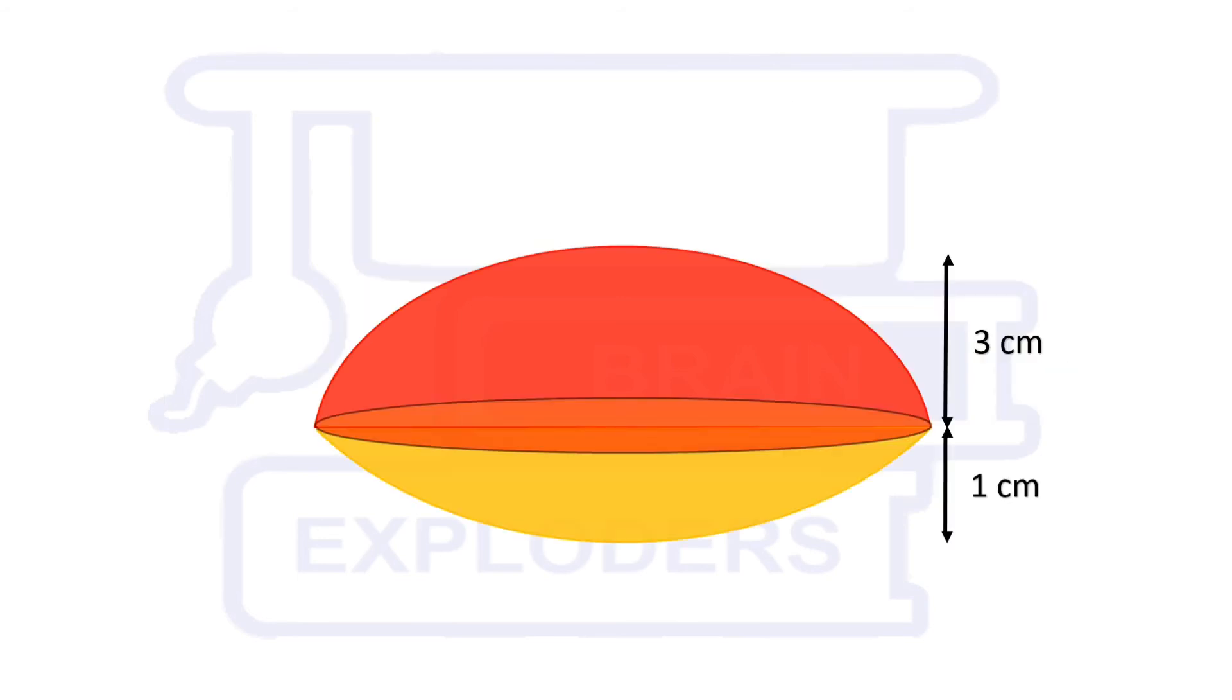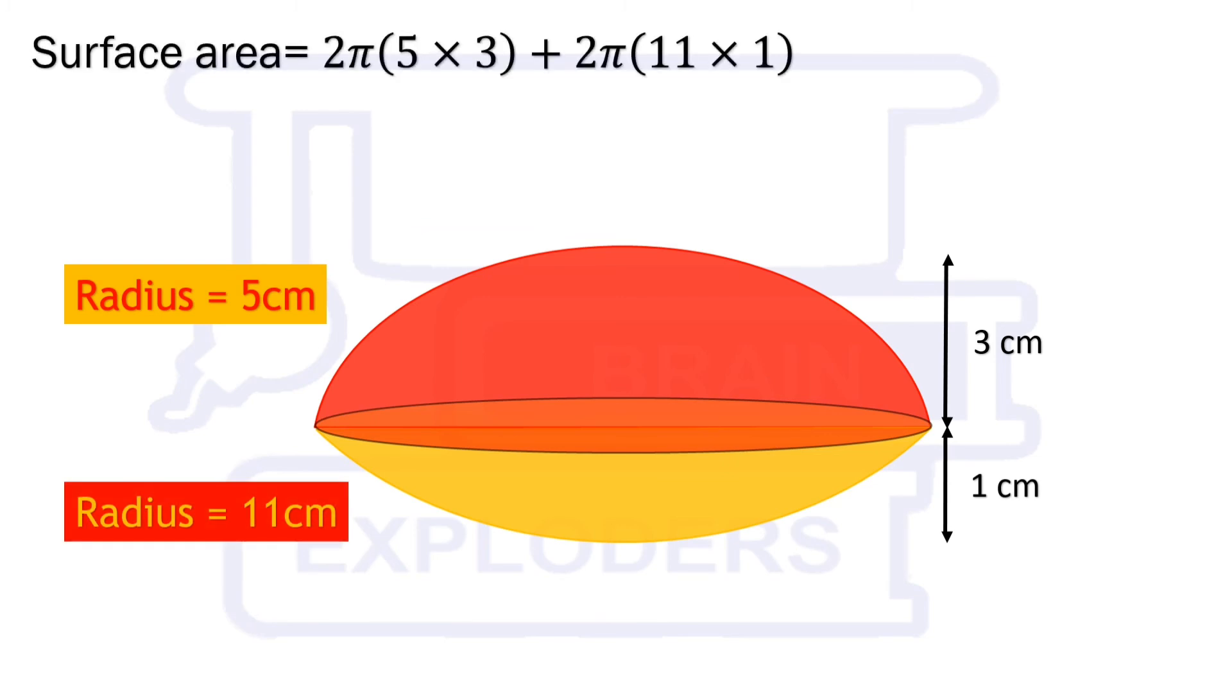Apply this formula in the given problem and we get that total surface area of the shape is 52π square centimeters which is approximately equal to 163.36 square centimeters and this was our solution.